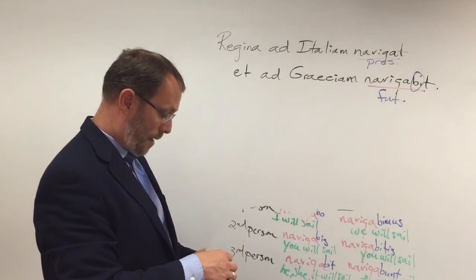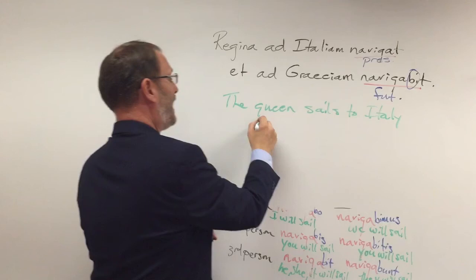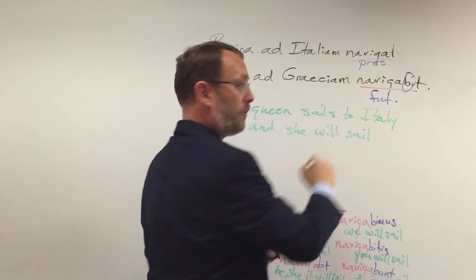So what's happening? You have the queen — present tense — sailing to Italy, and she will sail to Greece in the future. And that's the future tense for first conjugation verbs.